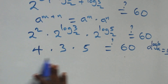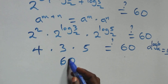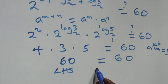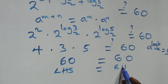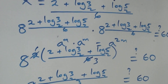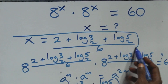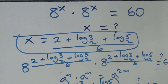Then 4 times 3 is 12, and 12 times 5 is 60, which is equal to 60 on this side. The left hand side is equal to the right hand side. And therefore, we conclude that x equals to 2 plus log 3 base 2 plus log 5 base 2, all over 6, satisfies this given problem. Thank you for watching, don't forget to subscribe for more videos, turn the notification bell on, share this video with thumbs up and post your comment. See you next time, bye for now.